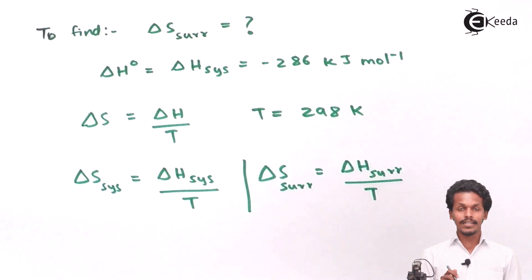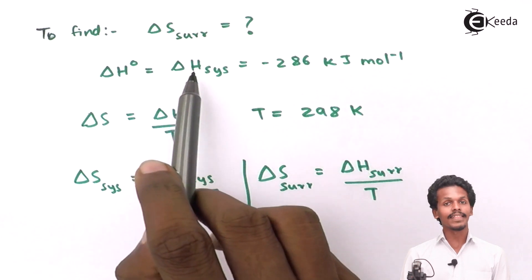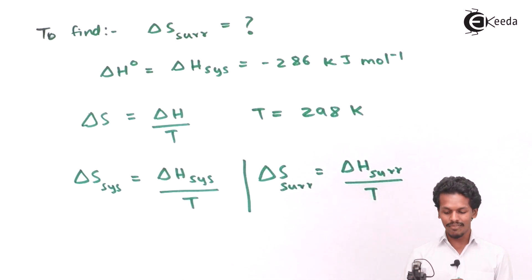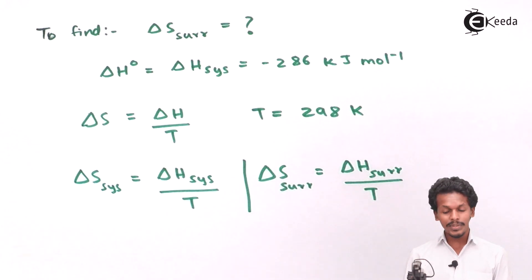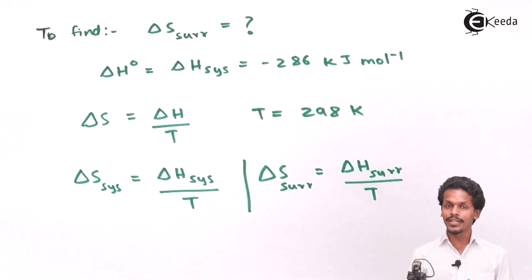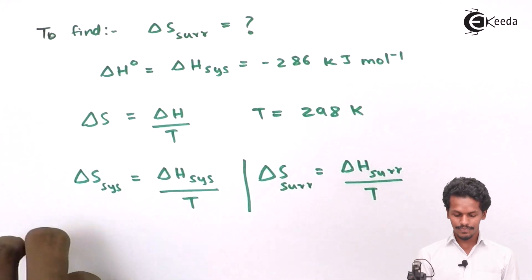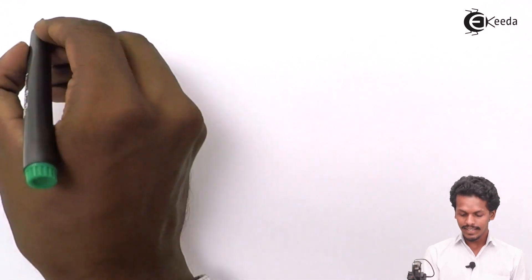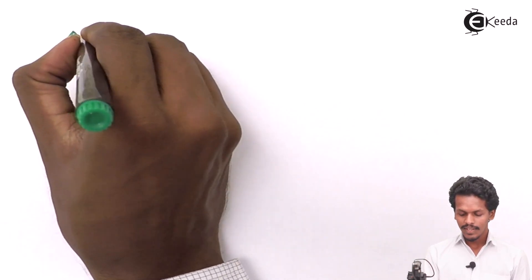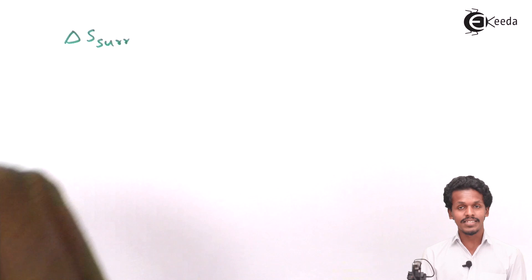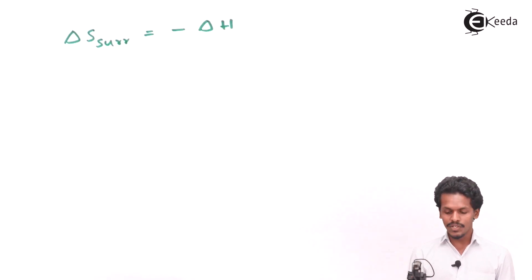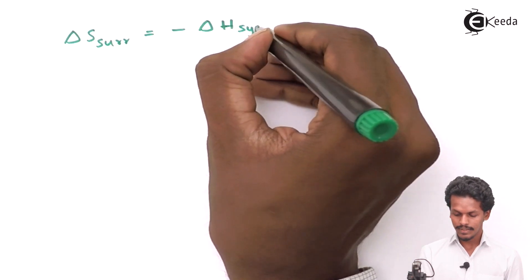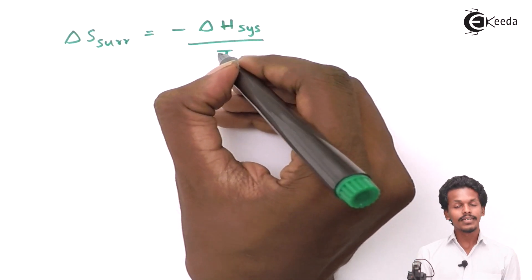In this case, what they have provided us is the enthalpy change of the system, and on that basis we have to calculate the entropy change of the surroundings. For that, the entropy change of the surroundings equals minus of the enthalpy change of the system divided by the temperature.